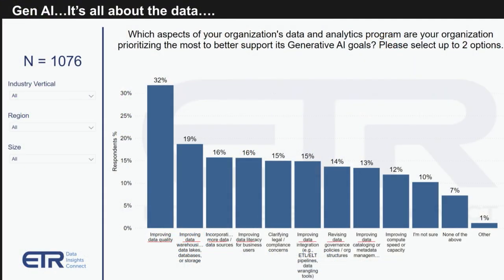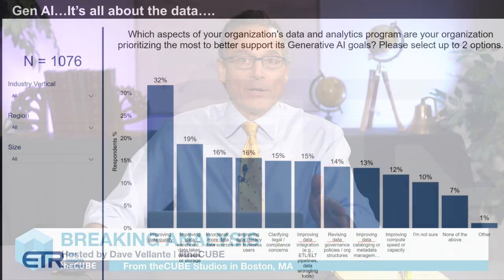You won't be surprised by this ETR survey data asking customers where their focus is on Gen AI data and analytics priorities related to their Gen AI adoption. Look at improving data quality, improving data warehouses and data lakes and storage data, incorporating more data, improving data literacy, better data integration, revising data governance policies, improving data cataloging, better metadata management. Again, it's all about the data.